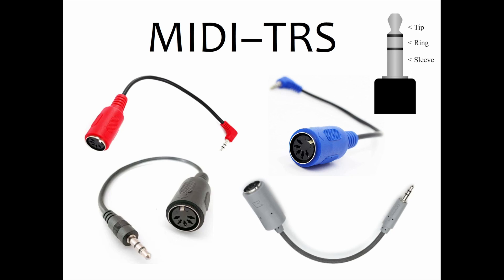These adapters are known as MIDI TRS. TRS stands for Tip Ring Sleeve. If you look at the headphone plugs, you'll notice they have three silver bands on them — those are the electrical connections known as the tip, the ring, and the sleeve. So there are three electrical connections on the TRS jack. But hold on — there are five connectors in the DIN connector but only three on the TRS. How does that work?